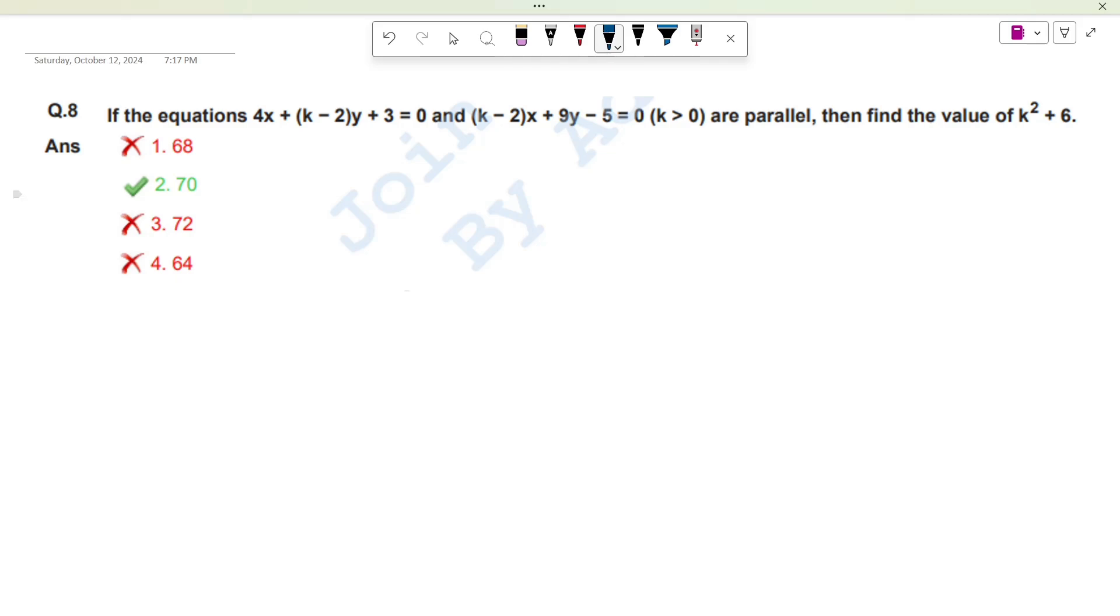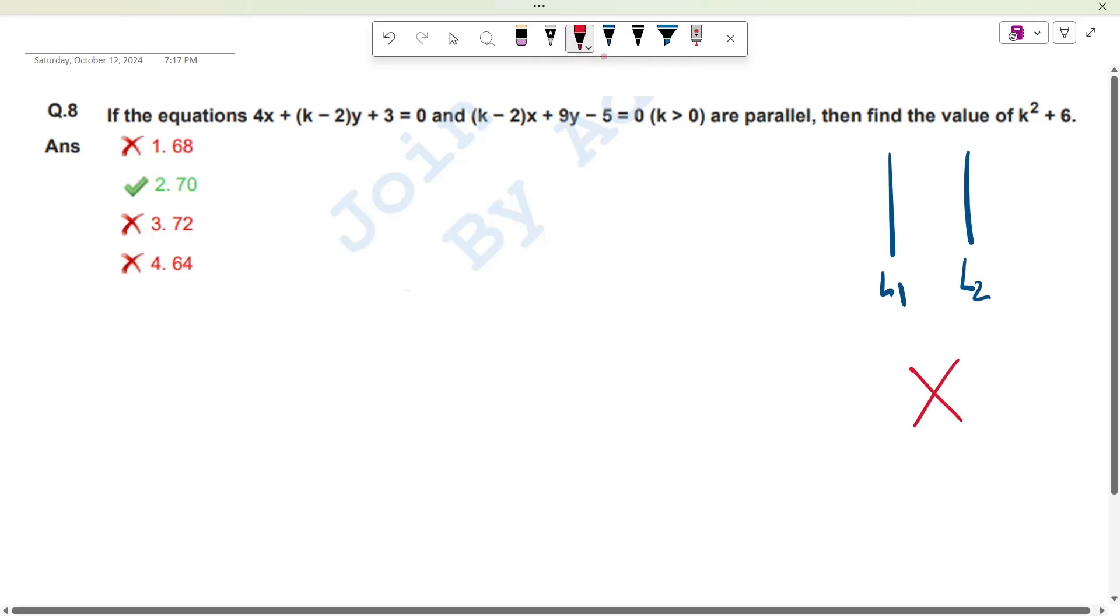Parallel means two lines. For example, this is line 1 and this is line 2. Parallel lines are those which never intersect. Like these lines are intersecting lines at one point. These are parallel lines which never intersect.